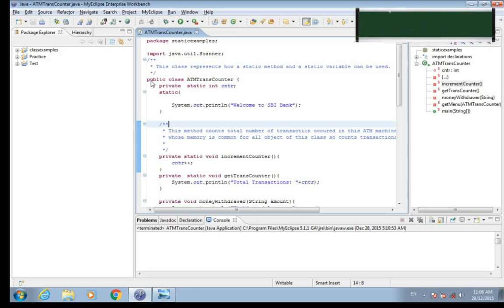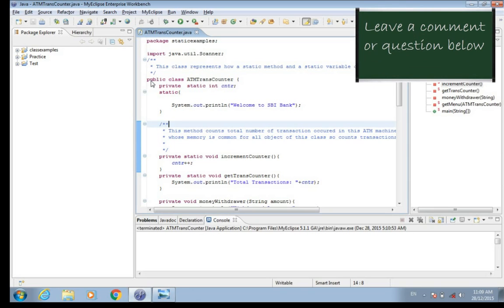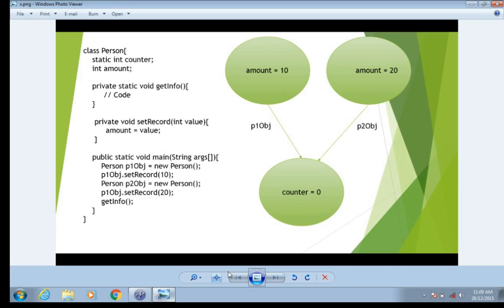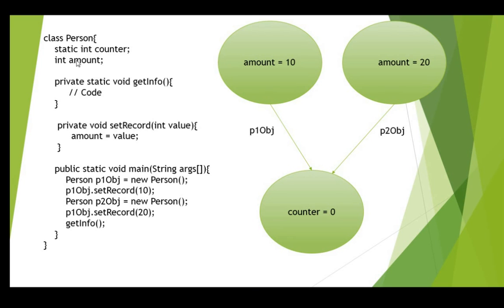Hello friends, today I'll show you how to use static variable, method, and static block in Java. To understand why we have the static keyword in Java, I'll explain with an example. I created a class named Person which has a static variable called counter and an instance variable called amount. We generally call a static variable a class variable because it belongs to the class — in this case, Person — and amount is called an instance variable.